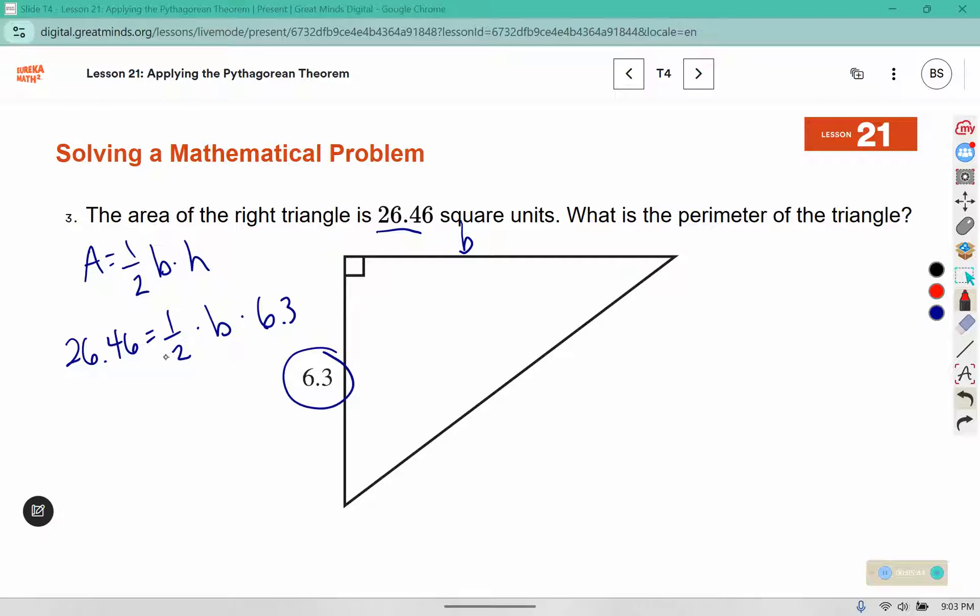So we can calculate half of 6.3 would be 3.15, and then we still have B as multiplied in and 26.46 is the area. So to solve for B, we're going to divide both sides by 3.15. This leaves us with B. And over here when we type this into our calculator we get 8.4. So now I know this dimension is 8.4.